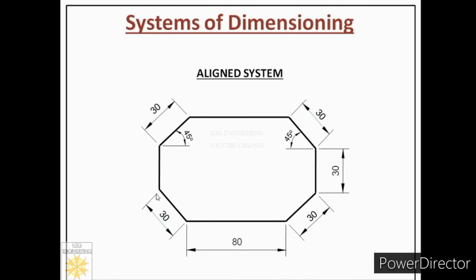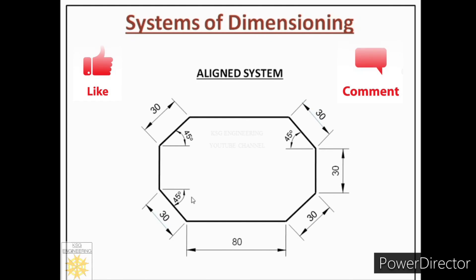Similarly, for other angle cases, draw the extension line, dimension line, and closed-field arrowheads. Determine which side is the above side — you cannot place the dimension below the line. So the correct side is above the dimension line at the middle and aligned to the dimension line. I hope the aligned system is clear to you.